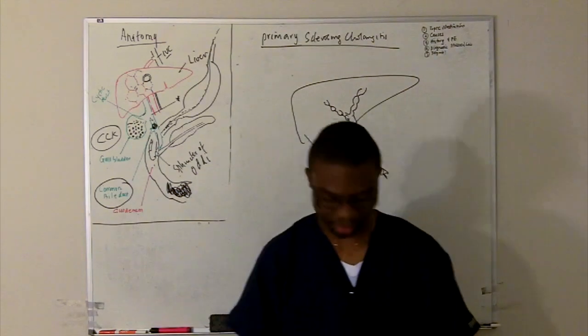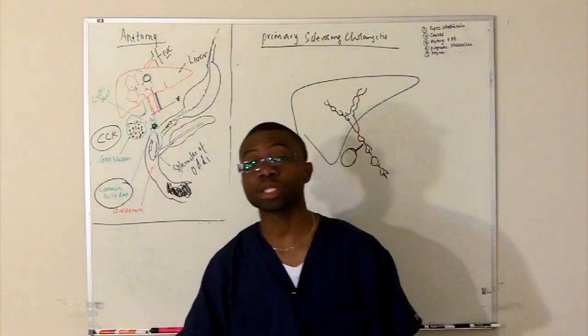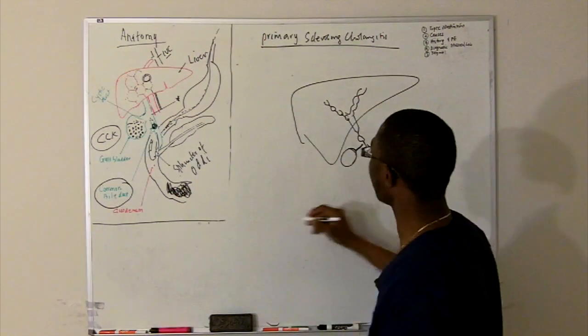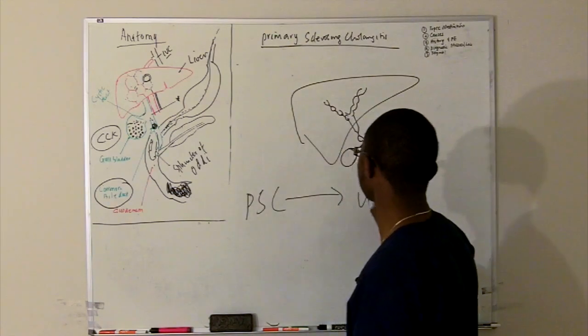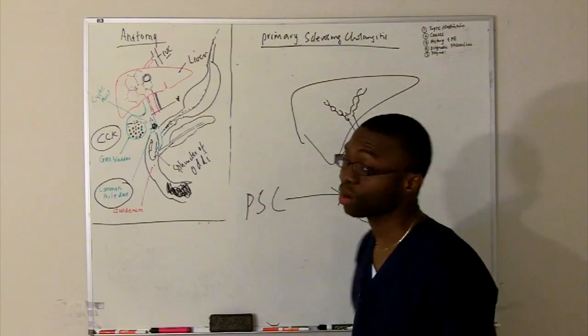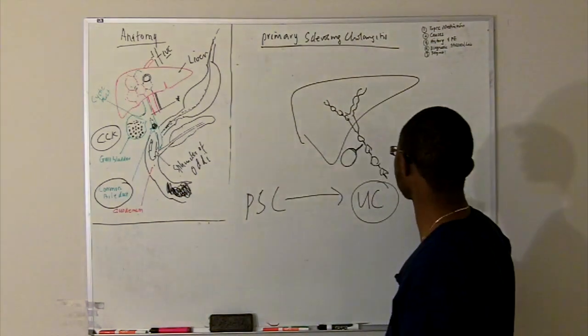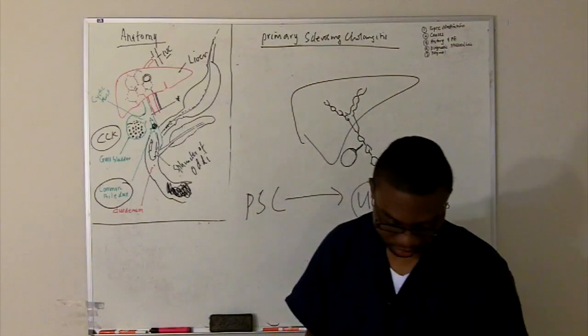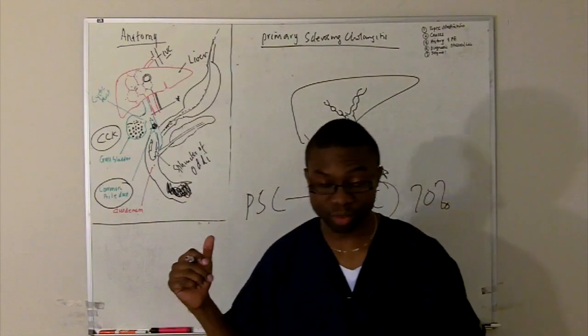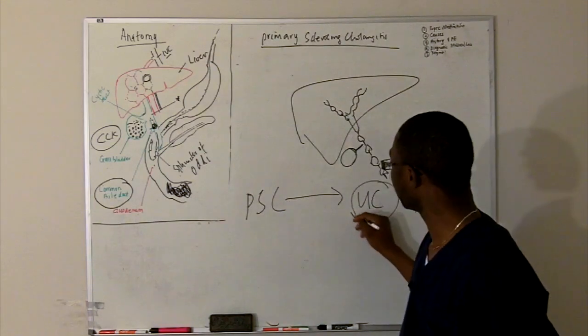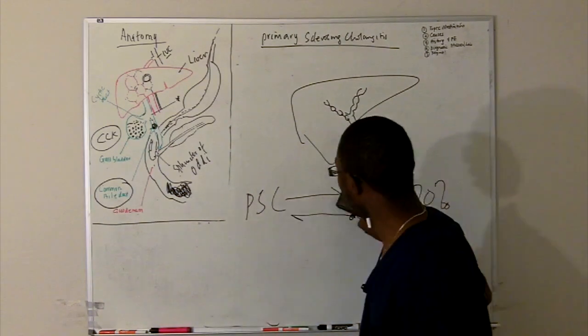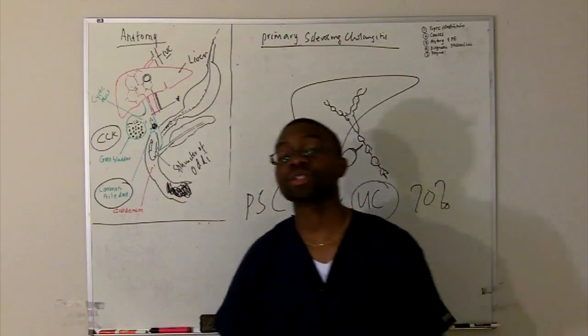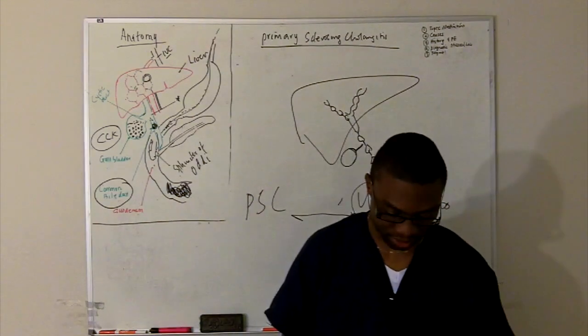Now, this is idiopathic. We don't know what causes it, but we do know what it's associated with. It's associated with ulcerative colitis. Patients with primary sclerosing cholangitis, most of them are actually ulcerative colitis patients. 70% of patients with primary sclerosing cholangitis and ulcerative colitis will end up developing this disease. It's not like ulcerative colitis causes it, but it's just an association that we've noticed in clinical medicine.